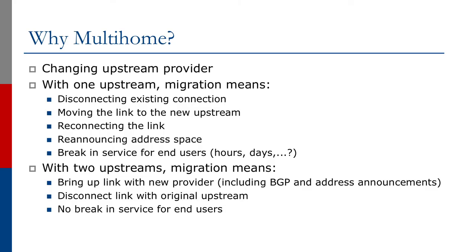However, with two upstream providers, migration becomes very simple. The operator brings up the link with the new provider, including BGP and all the address space announcements. The operator can verify that all filters are working around the internet, that the new link will take traffic, and do all the integrity testing on the link. Once they're satisfied with the new link to the new upstream, they can disconnect the link with the original upstream provider they wish to discontinue. This means there's no break in service for end users, and the network operator can transition from one upstream provider to the other without any break in service.